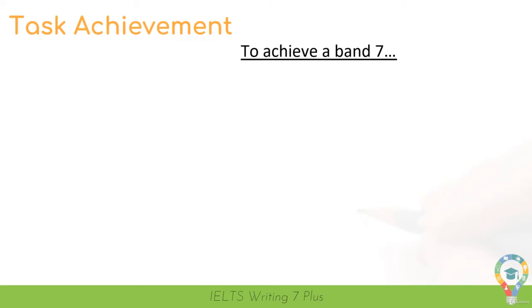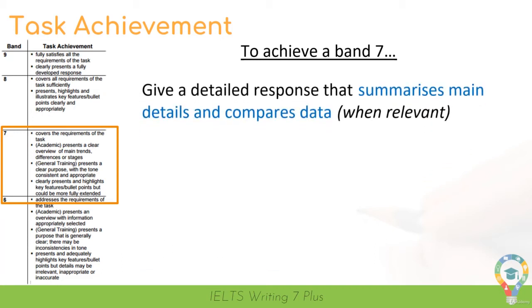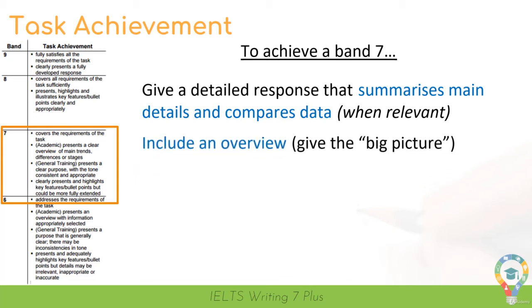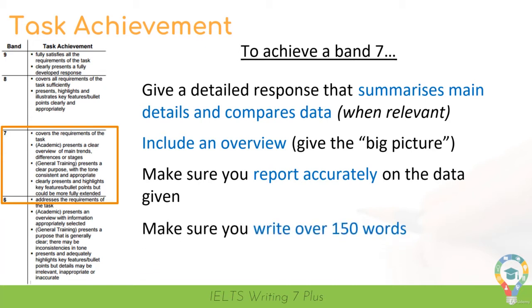Here are the band descriptors for task achievement. If you want to pause and have a quick read through, you can do that. To summarise: give a detailed response that summarises main details and compares data when relevant — you only need to compare data if it makes sense to do so. Include an overview to give a big picture of what you can see from the data. Make sure you report accurately, so the numbers and figures you report are correct. And you must write over 150 words.